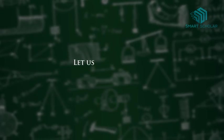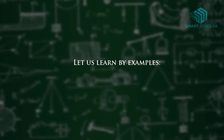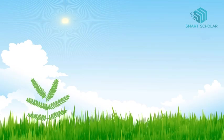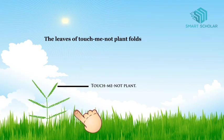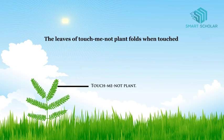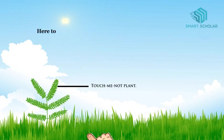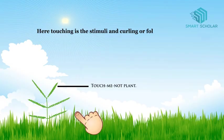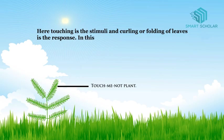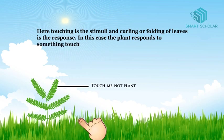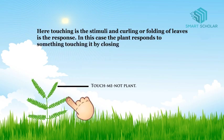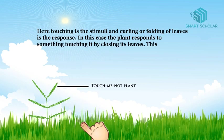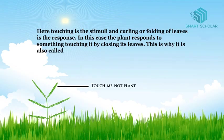Let us learn by examples. The leaves of a touch-me-not plant fold when touched. Touching is the stimulus, and curling or folding of leaves is the response. The plant responds to something touching it by closing its leaves — this is why it is called touch-me-not.